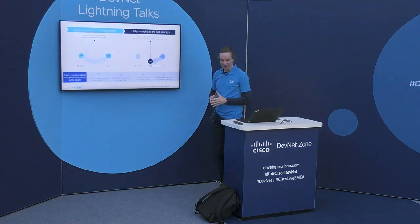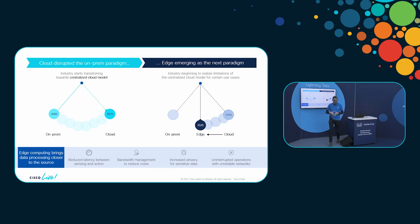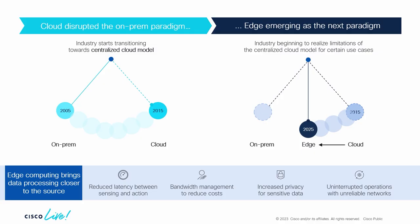Let's jump right into it. Back in 2010, all our compute was on-prem. Everything was running on-prem because there was no cloud. Then the cloud appeared and people swiftly moved all their workloads to the cloud, only to find out that for certain things, it's not so great if there is 200 milliseconds between you and the application.